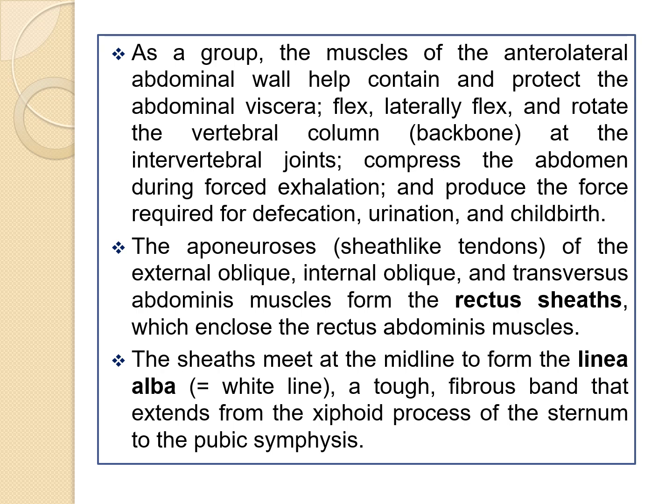As a group, the muscles of the anterior lateral abdominal wall help contain and protect the abdominal viscera, flex, laterally flex and rotate the vertebral column at the intervertebral joints. They compress the abdomen during forced inhalations and produce the force required for defecation, urination and childbirth. The aponeuroses of the external oblique, internal oblique and transverse abdominis muscles form the rectus sheath, which encloses the rectus abdominis muscles. The sheaths meet at the midline to form the linea alba, a tough fibrous band extending from the xiphoid process of the sternum to the pubic symphysis.